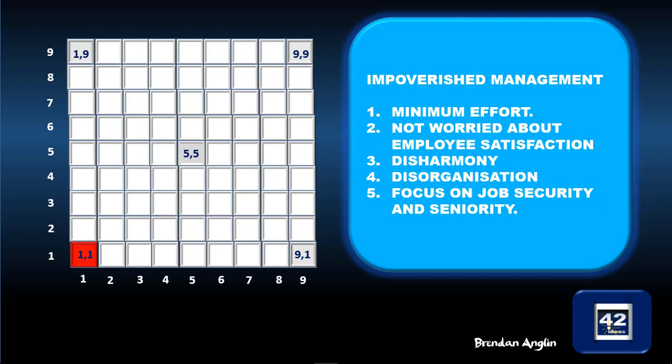Impoverished management is clearly the worst type of management. It is low in both concern for people and concern for production — scoring one and one. It involves minimum effort, is not concerned with employee satisfaction, and leads to disharmony or disorganization. The focus is on the leader's own job security and seniority, rather than the people working for them or the organization itself.